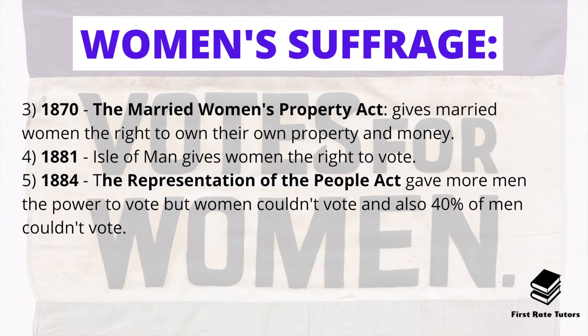In 1884 the Representation of the People Act was passed, which gave more men the power to vote; however, women still couldn't vote. Also bear in mind that not all men under this act could vote — in fact, 40% of men, the poorest in society, still didn't have the right to vote.